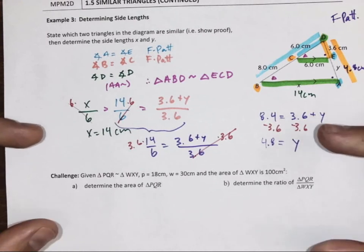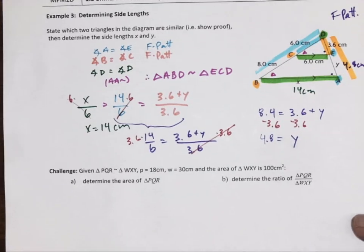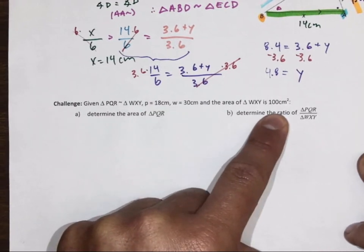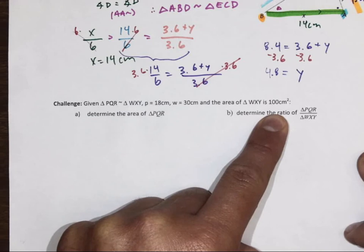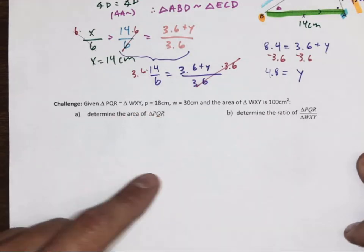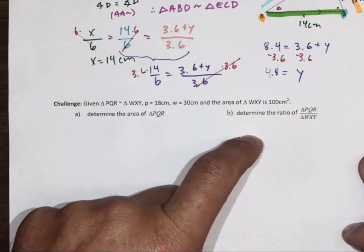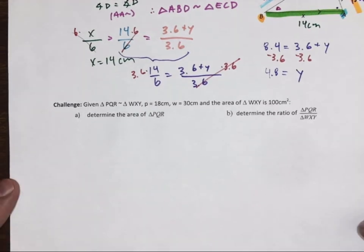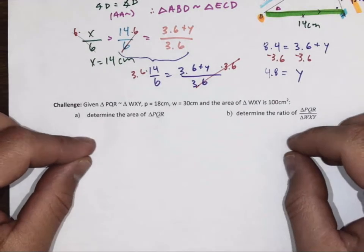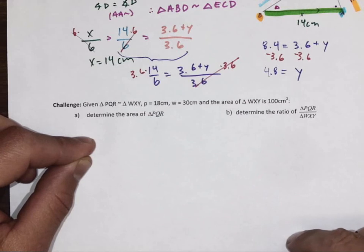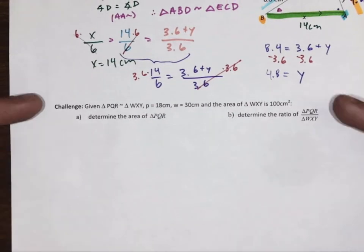Challenge. I'd like you to think about this, give it a try. The last video ended abruptly, but all of a sudden if we're talking about the area - base times height divided by 2. Let's see if you can determine the area for PQR, and then the ratio. Let's see what it is. We can look at the scale factor, but basically, if we know the scale factor, we can square it to get how much bigger the area of the larger triangle will be. So give that a try if you want. Otherwise, practice, practice, practice. Alright, good job.